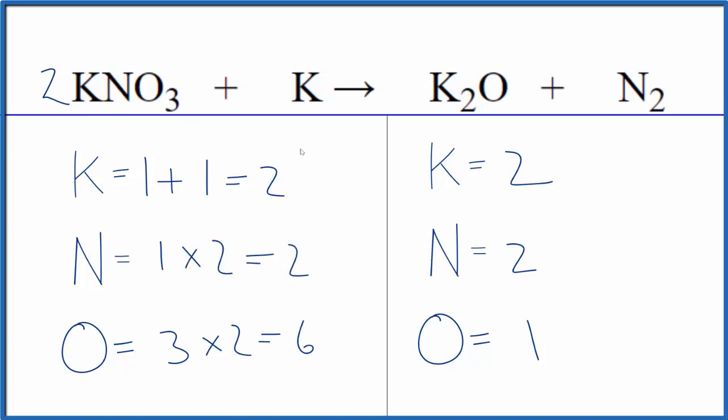And then we need to update our potassium atoms here. So we have one times two plus the one here. That gives us three. But that's okay. Potassium here by itself, that'll be easy to balance.